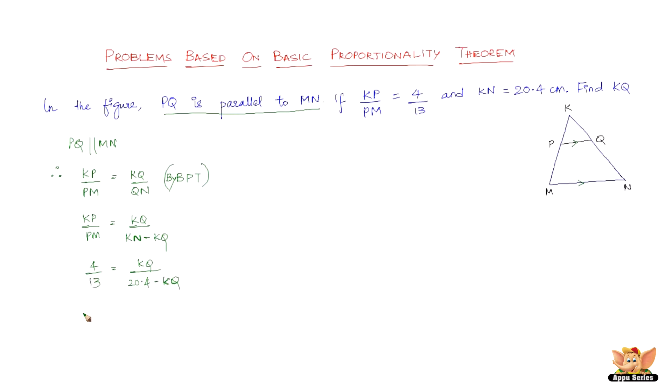So here it is. 4 times (20.4 - KQ) = 13 times KQ. So, 4 times 20.4 is nothing but 81.6 minus 4 times KQ. Let me draw a line here. Equals 13 times KQ.